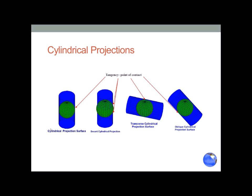These are different sorts of cylindrical projections, differing in how they contact the surface of the planet and their orientation. Cylindrical projections can be either tangent — contacting the surface in one area — or secant, contacting the surface in two areas. The secant projection has less distortion than the tangent projection. A regular cylindrical projection is vertical with its point of tangency on the equator — that's actually a Mercator projection.